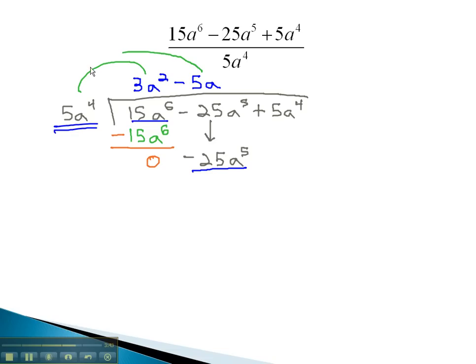Multiplying negative 5a times 5a to the 4th will be negative 25a to the 5th. Again, before we combine, we must change the sign, making it positive 25a to the 5th, which will give us 0.